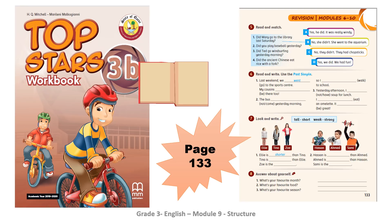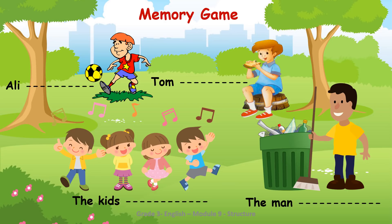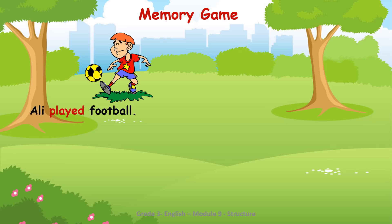For more practice, you can open your workbook, page 133, to do activity number six. Now let's see how good your memory is. Look at the picture and try to remember what these people did at the park yesterday. What did Ali do? Ali played football.